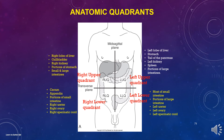The left upper quadrant consists of the left lobe of the liver, stomach, tail of the pancreas, left kidney, spleen, and portions of the large intestine. The left lower quadrant consists of most of the small intestine, portions of the large intestine, left ureter, left ovary, and left spermatic cord.